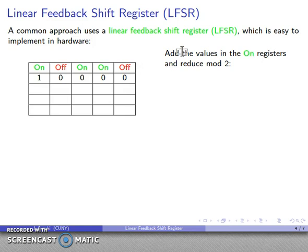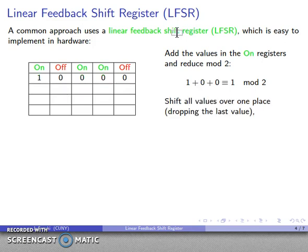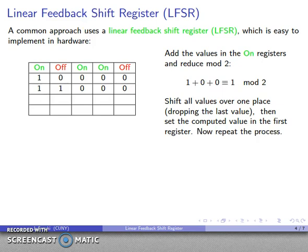So now, what I'm going to do is I'm going to add bitwise addition. I'm going to add the values in the on registers, and I can actually hardwire this. I'm going to add the values in the on registers and reduce the mod 2. So that's going to be 1 plus 0 plus 0. That's 1. Reduced mod 2. And that's going to be 1. Then, I'm going to shift, so there's my shift. I'm going to shift everything over one place, and as necessary, I'll drop the last value. So I'm going to shift everything over one place, and then I'm going to set the value I just computed in the first register. Now, that's where the feedback comes in, because when I compute this value, it goes into the system itself and starts to affect all of the values.